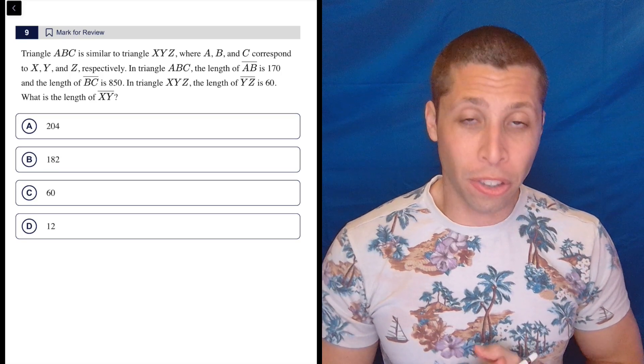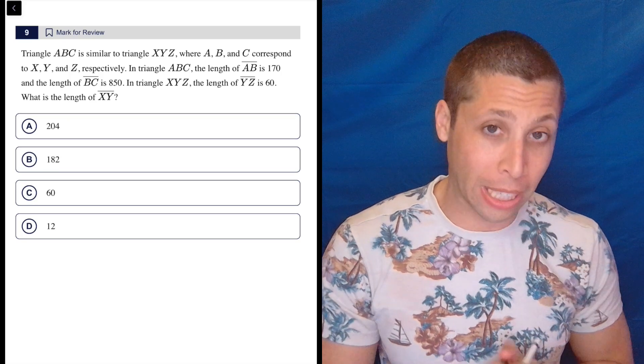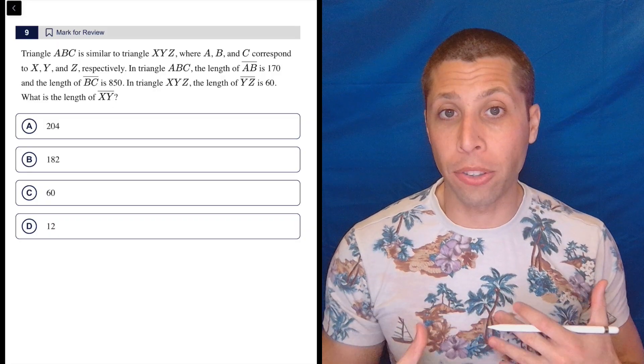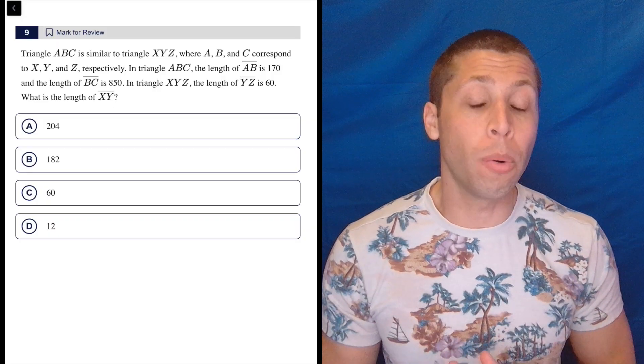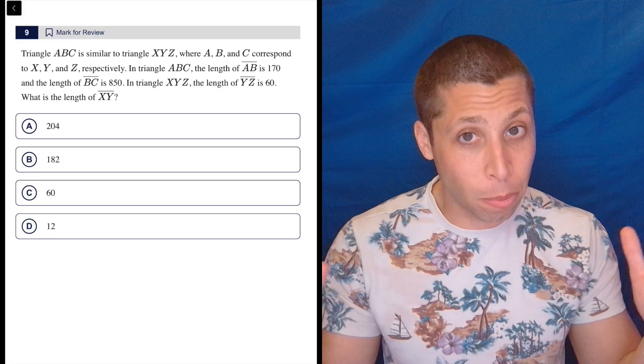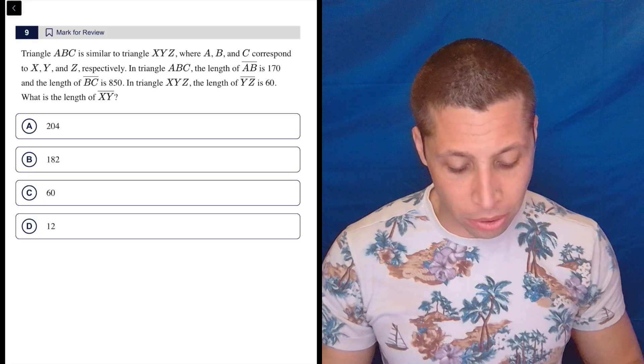It's always nice when they tell us the triangles are similar, so we kind of know what we're going to need to do. Probably set up a proportion, and the reason for that is they're giving us side lengths. So sometimes with similar triangles, they're asking about angle measures, and we know that that's kind of what makes triangles similar, is that their angle measures are the same. The sides will be different, but the angles will be the same. Here, we're clearly dealing with sides.